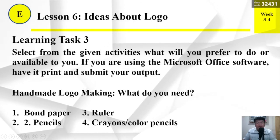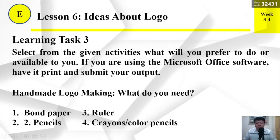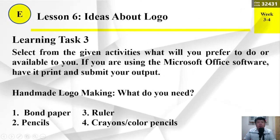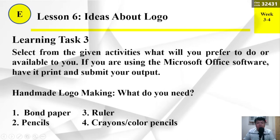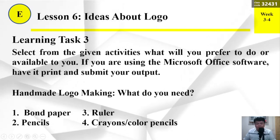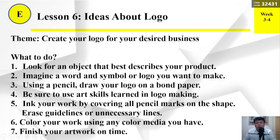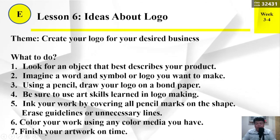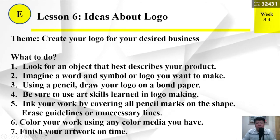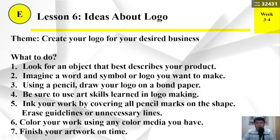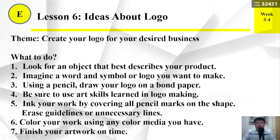Learning task number 3. Select from the given activities what you prefer to do or what is available to you. If you are using the Microsoft Office software, have it printed and submit your output. Handmade logo making — what do you need? Pan paper, pencils, ruler, crayons or color pencils. Theme: Create your logo for your desired business. What to do: Number 1, look for an object that best describes your product. Number 2, imagine a word and symbol or logo you want to make. Number 3, using a pencil, draw your logo on bond paper. Number 4, be sure to use art skills learned in logo making.